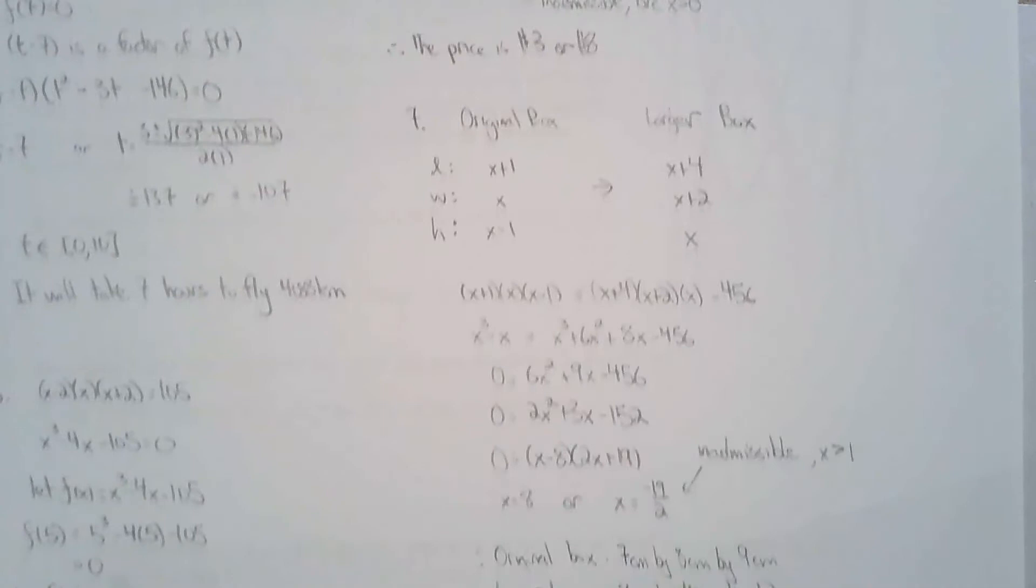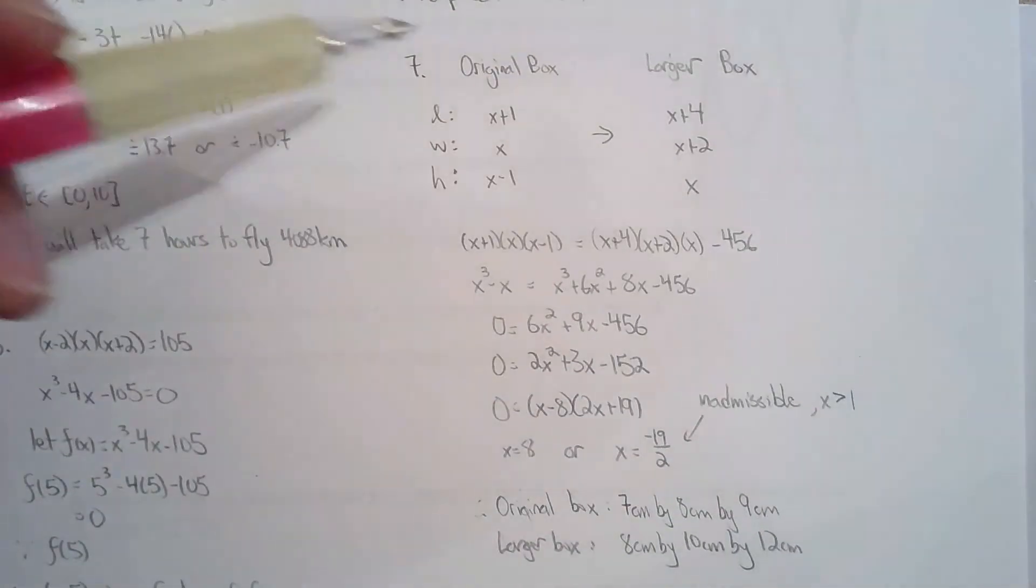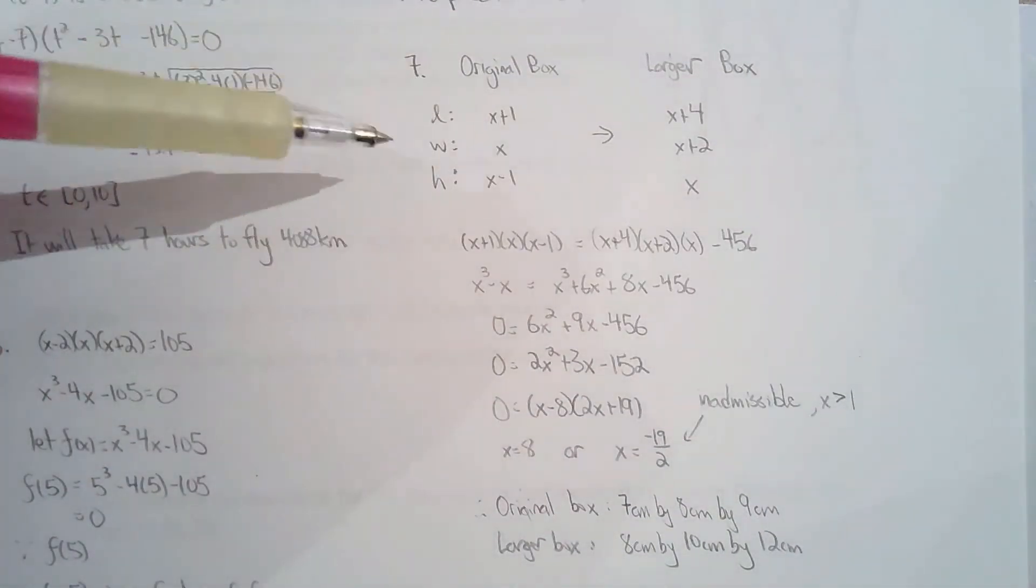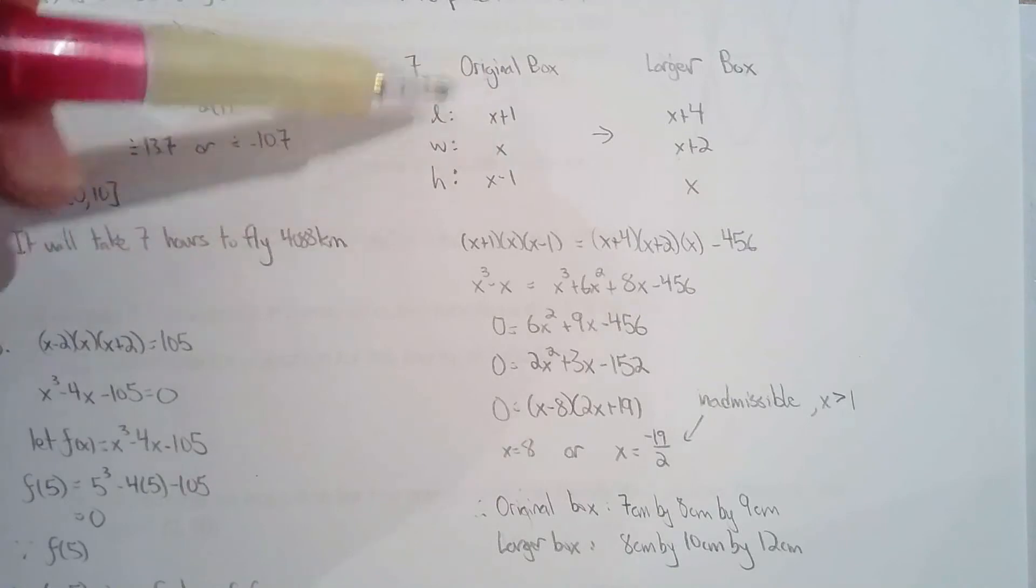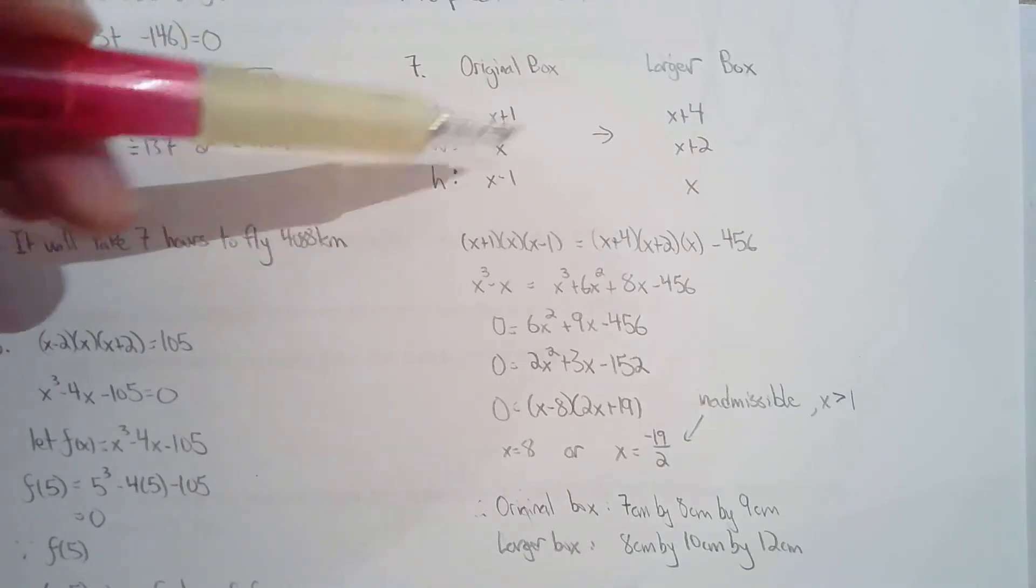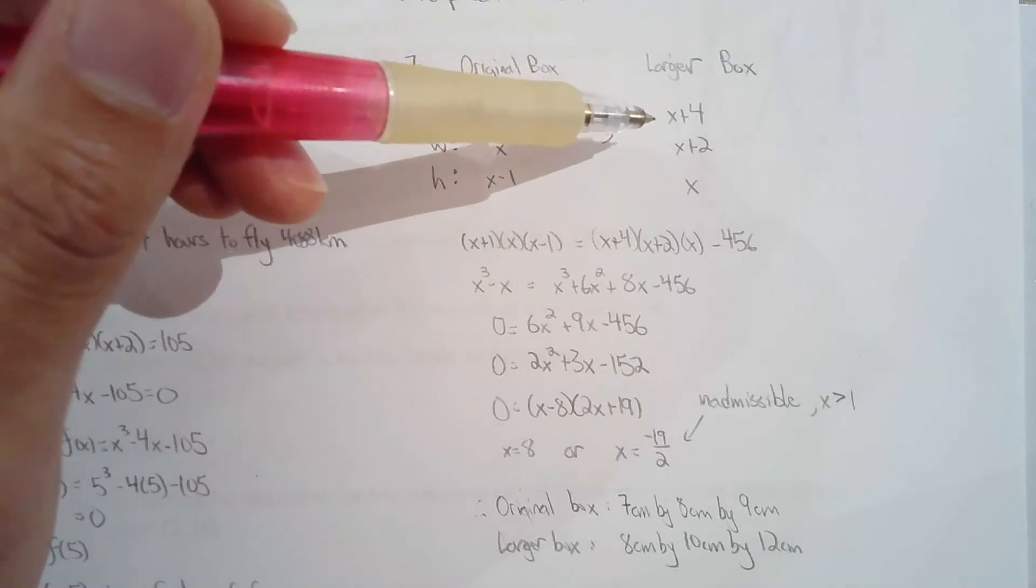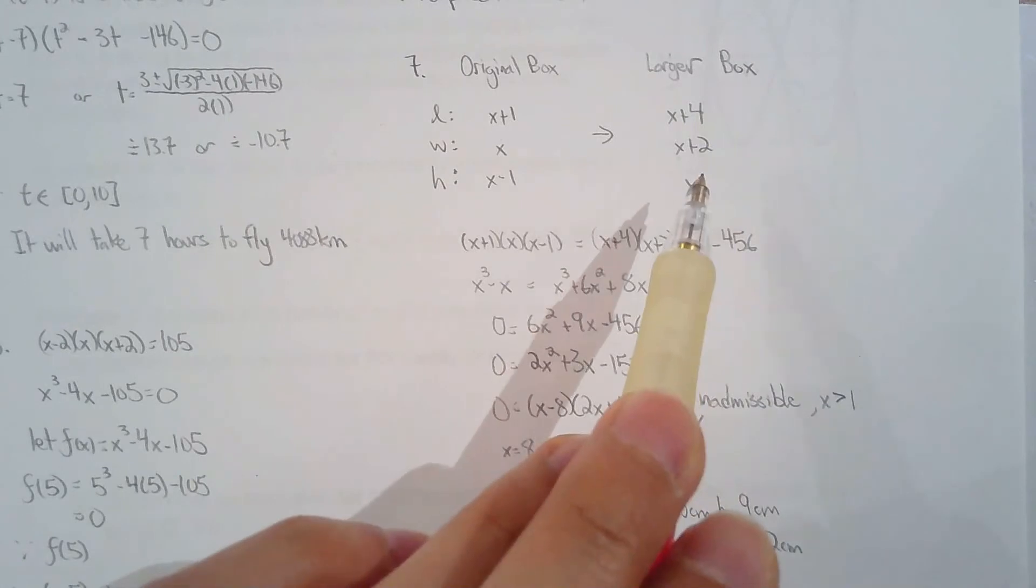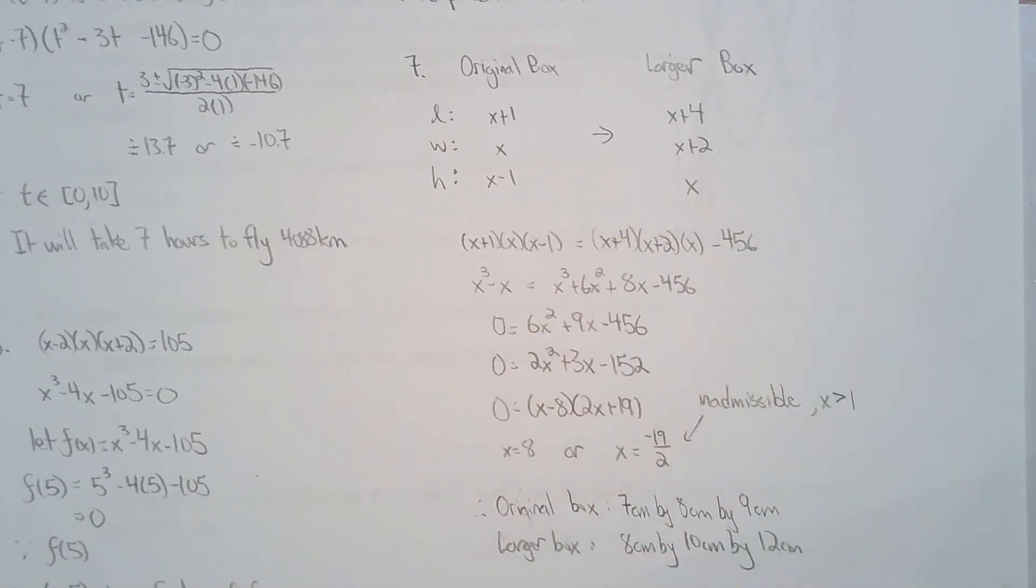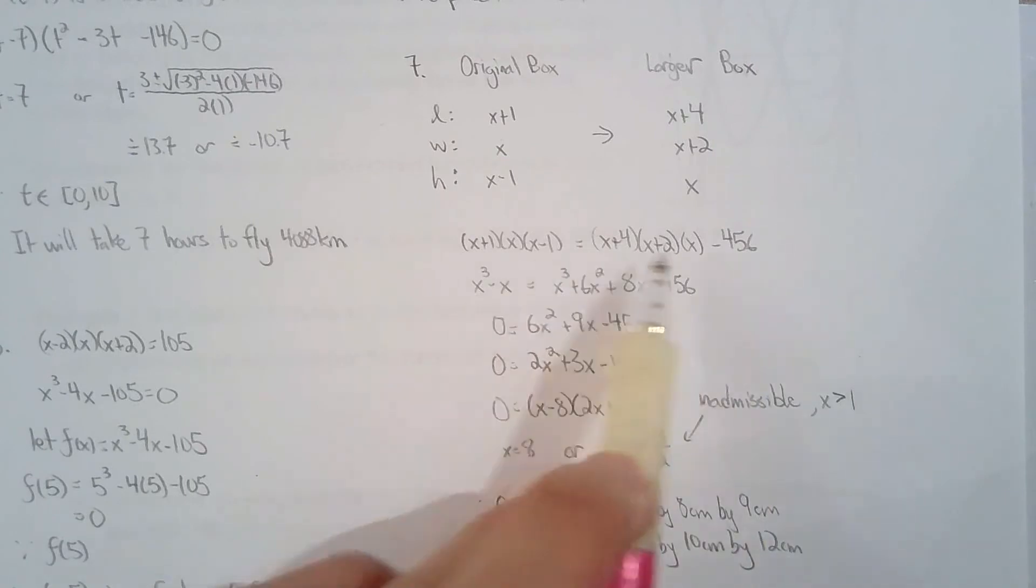Question 7 is another very classic test question. You have two boxes. So, the original box, its dimensions are consecutive integers, where the length is the greatest integer of the three, and the height is the least. And then, they modify the dimensions in order to make a larger box. They tell me that the larger box is 456 cubic centimeters greater in volume. So, you can generate this equation. And from here, you solve the equation. Expand, expand, expand. That equals 0.